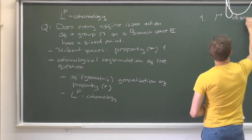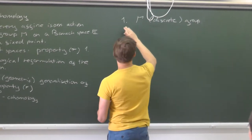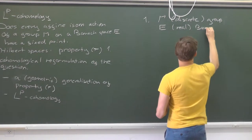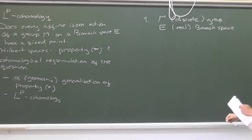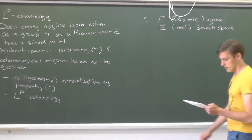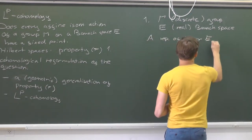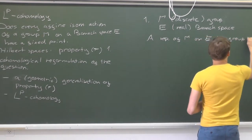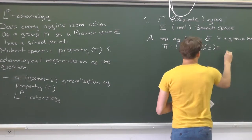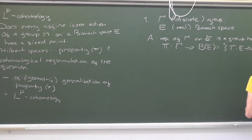Throughout, we assume that gamma is a discrete group — this is optional, but we don't want to go into discussions on topology. And E will be a real Banach space, because we want to have a good characterization of the bijective isometries. A representation of gamma on the Banach space E is a group homomorphism from the group into the bounded linear invertible operators on E.